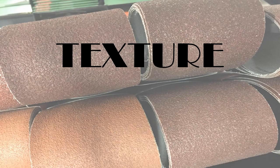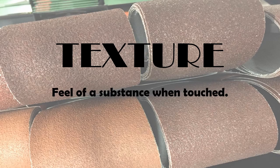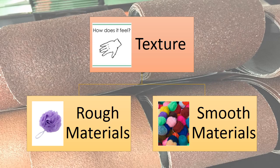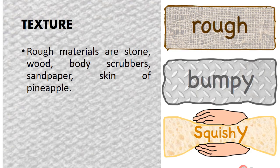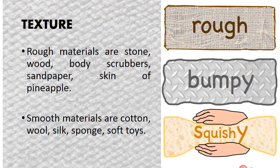Now moving on to the next property — texture. Texture can be defined as the feel of a substance when it is touched. Based on texture, materials can be divided into two categories: rough materials and smooth materials. Examples of rough materials are stone, wood, body scrubbers, sandpaper, and the skin of a pineapple. Examples of smooth materials are cotton, wool, silk, sponge, and soft toys.